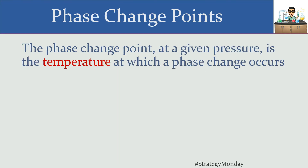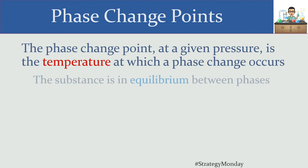The phase change point, given a particular pressure, is going to be the temperature at which that phase change happens. The phase change is not happening below that temperature, not happening above that temperature — it's happening at that particular temperature. That means the substance needs to be in equilibrium between phases. When you're crossing a border between one city and another, technically that border doesn't belong to either side — that imaginary line is right between.